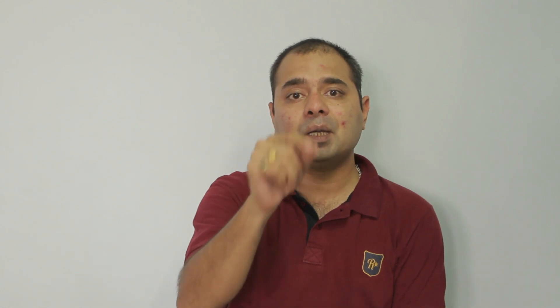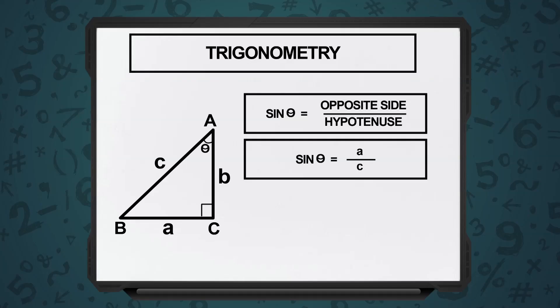Just step back for a moment. What will happen if I say sin theta divided by cos theta? Sin theta I know is A by C, cos theta I know is B by C.